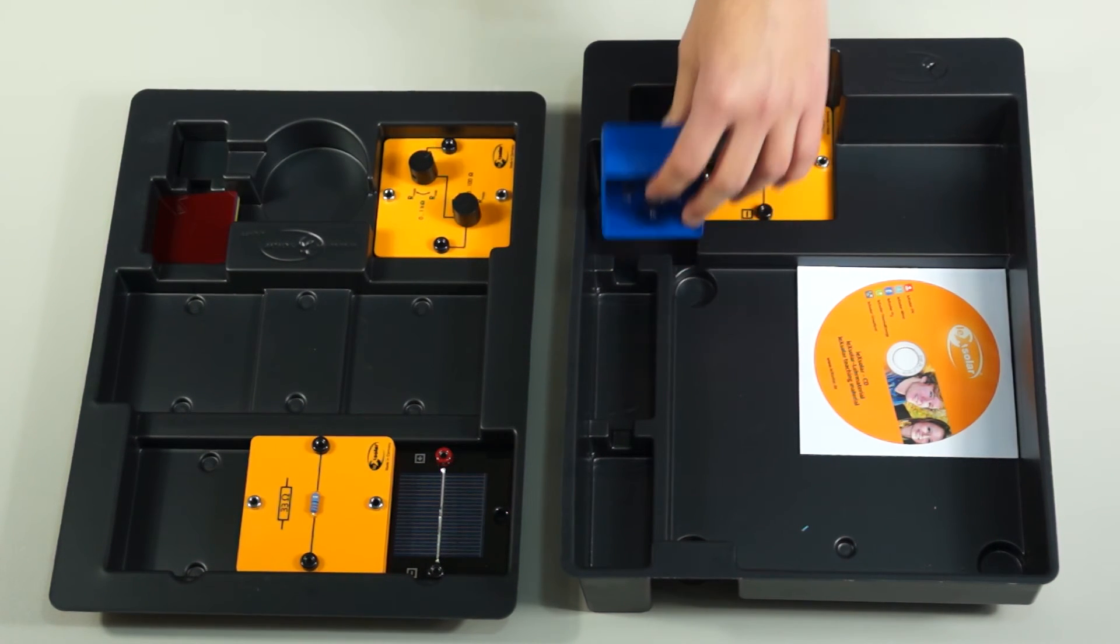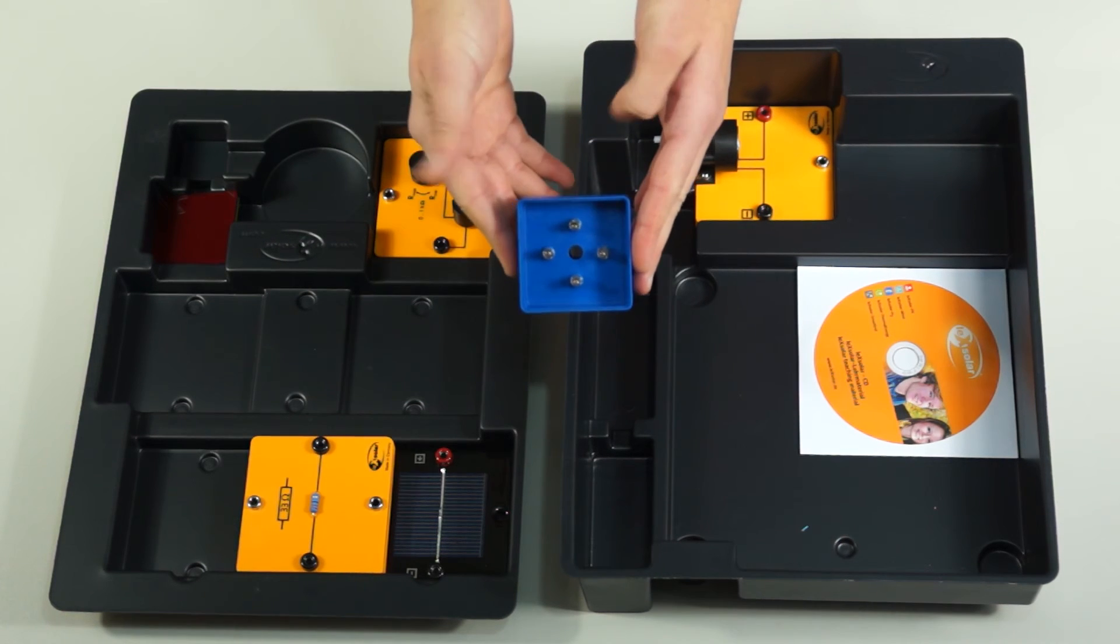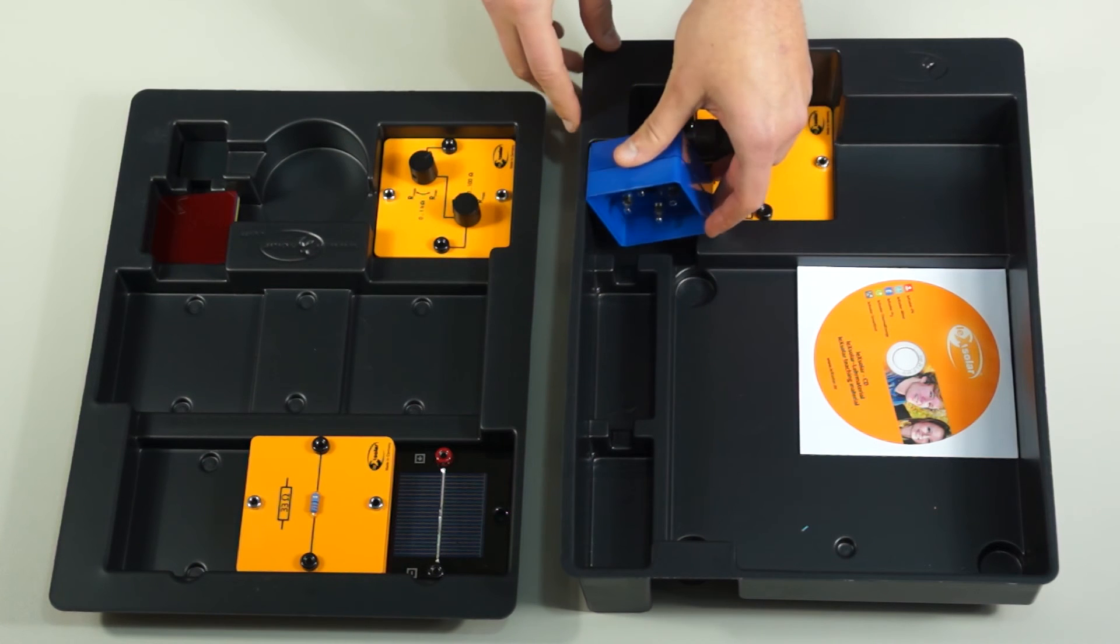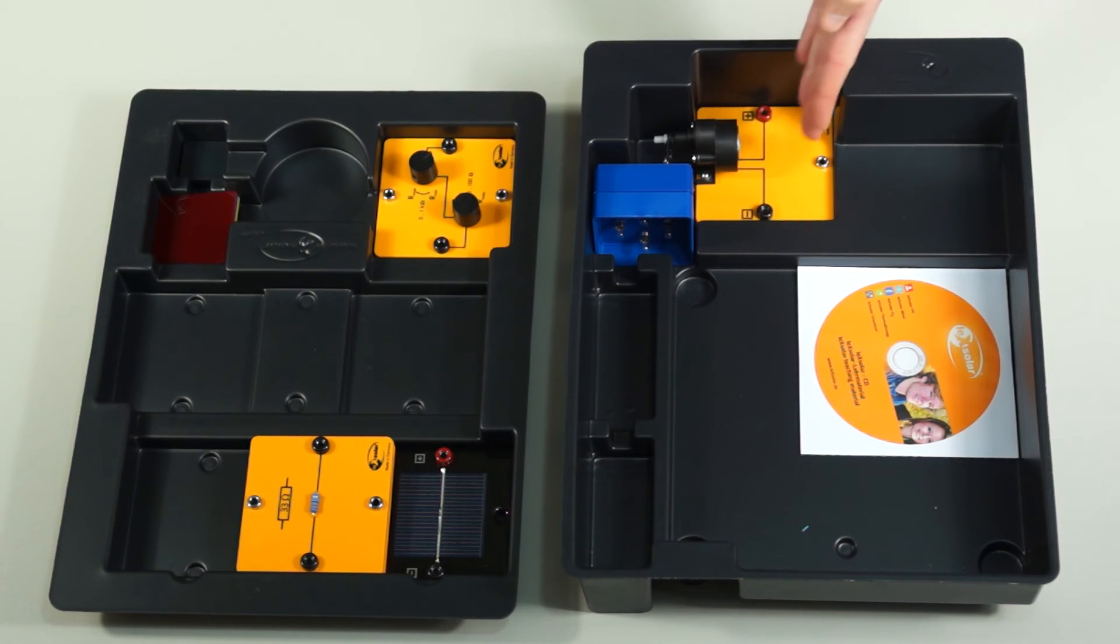The lighting module allows for experiments such as the dependence on luminance to be carried out. The efficiency of a solar cell can be determined with the help of the gear motor module.